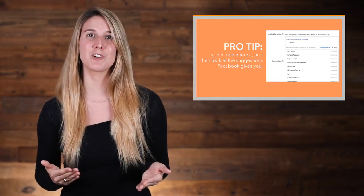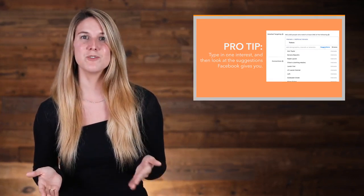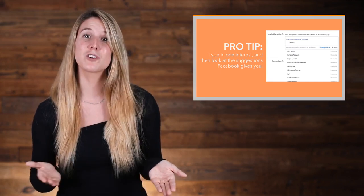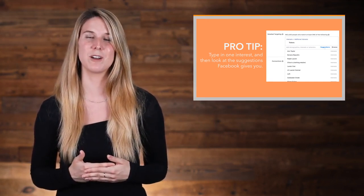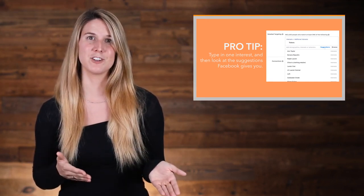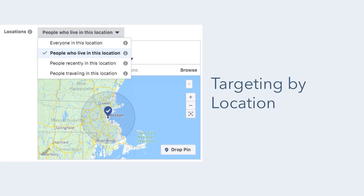Interests, location, and demographics are only a few options for targeting. You can also target people by their political views, life events, ethnicity, and so on. Company and job titles are good ones for B2B companies. For location, Facebook lets you drill down pretty specifically from country, region, and county all the way down to city, postal code, or even a specific address radius.